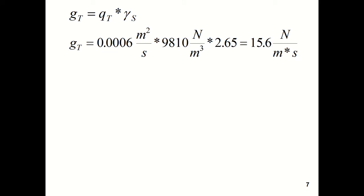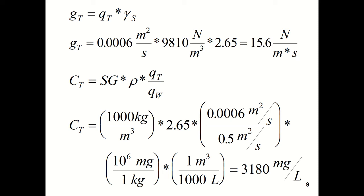Next, we want the total sediment concentration, which is the specific gravity of the sediment times the density of the water times the volumetric sediment transport rate divided by the flow per unit width, q sub w.